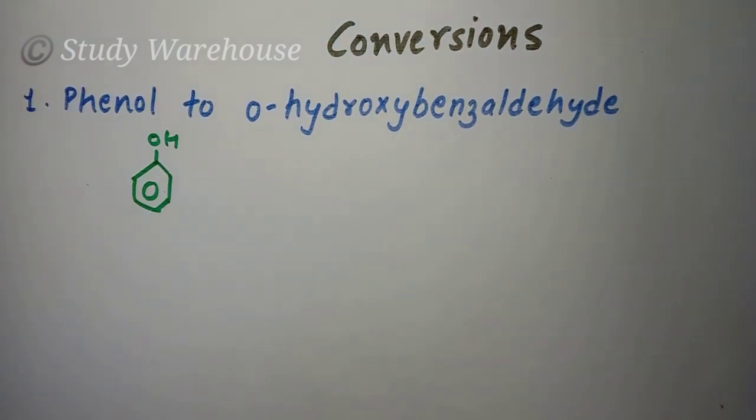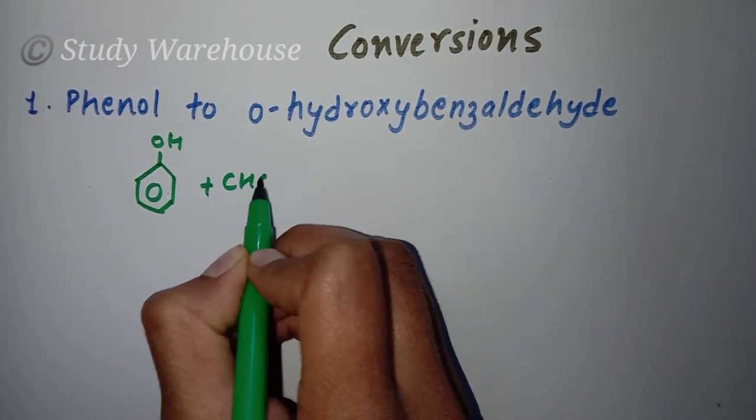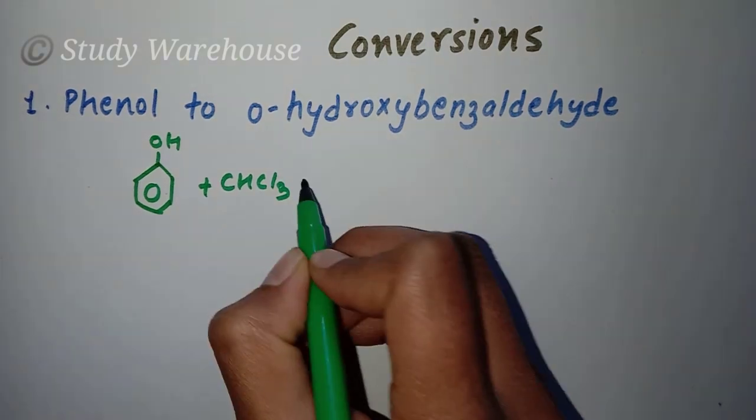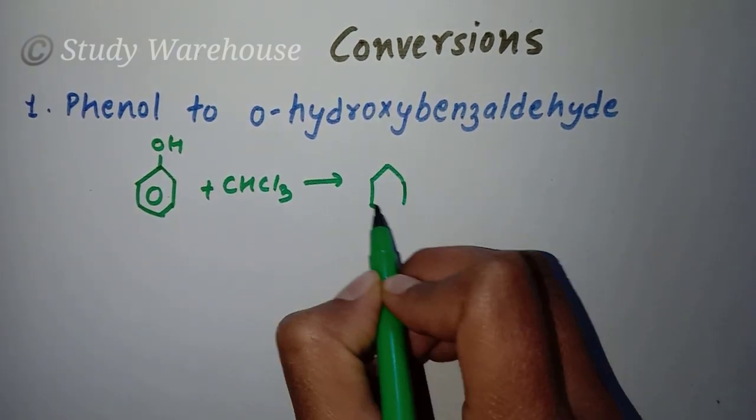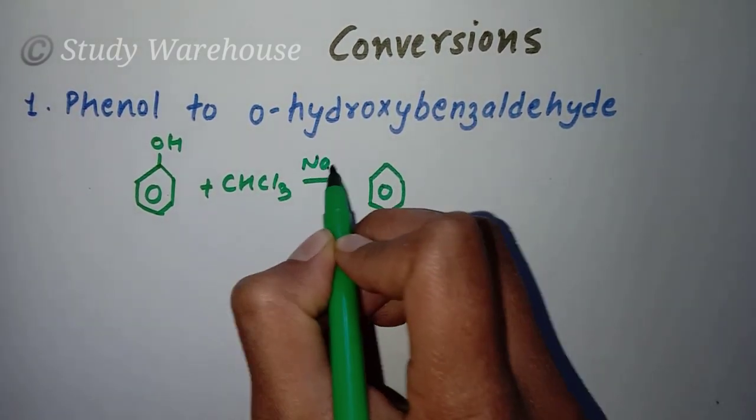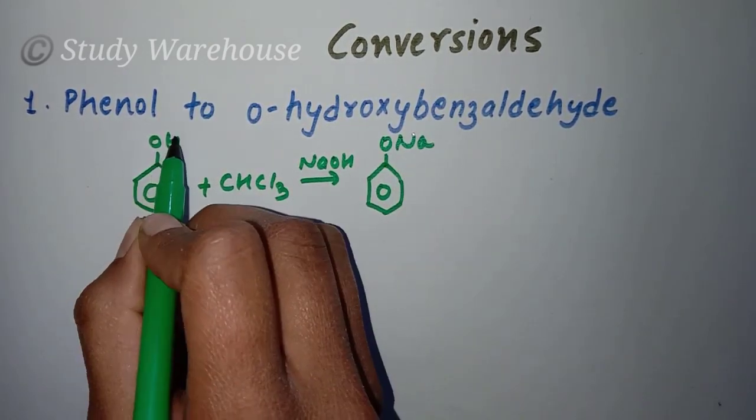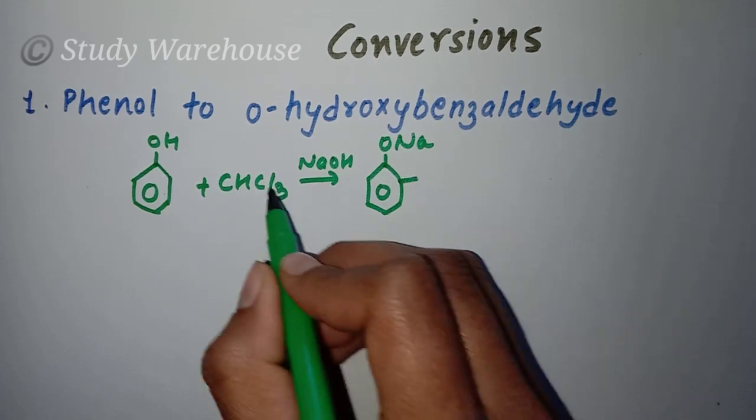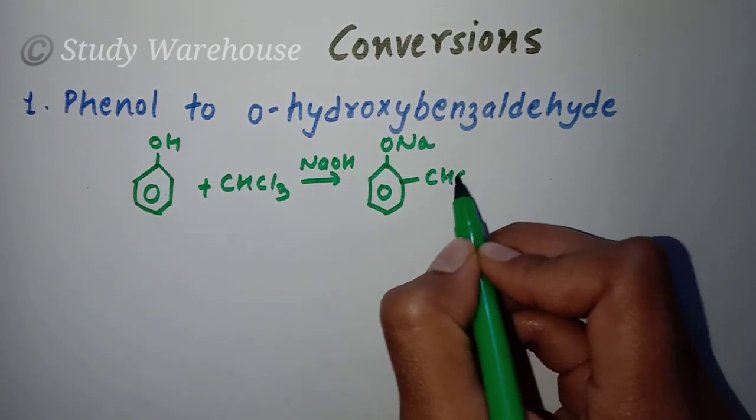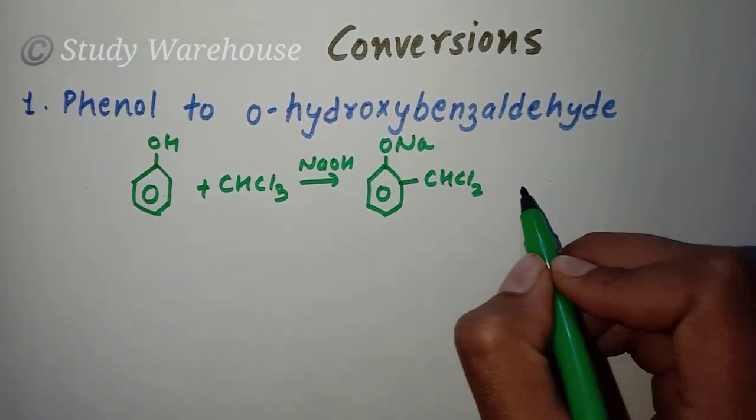What happens in the Reimer-Tiemann reaction? We have to take phenol. First of all we have to change phenol to sodium phenoxide. Then we react with CHCl3, that is chloroform. Here ONa will be replaced and H will be replaced, and CHCl2 will be attached.